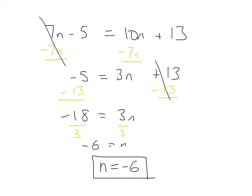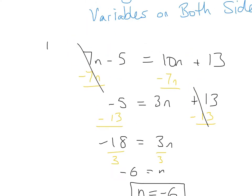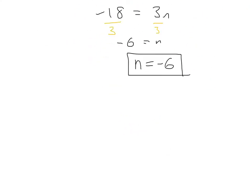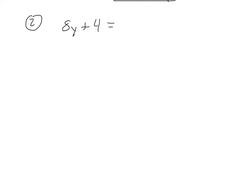It's always preferred to have the variable first, but it's not wrong the other way. That's how you solve an equation with variables on both sides. Now for problem number 2, I want you to try on your own: 8y plus 4 equals 11y minus 17. Pause the video, solve for y, then play it when you're done and we'll keep moving.